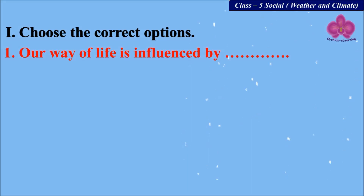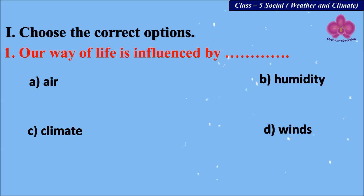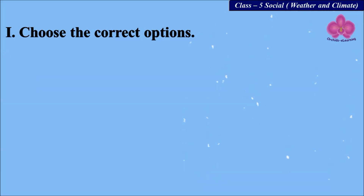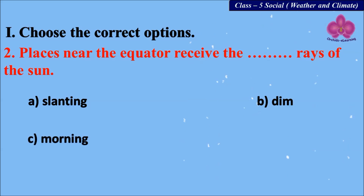Number one: our way of life is influenced by dash. The options are: A) air, B) humidity, C) climate, and D) winds. Our way of life is influenced by dash, and the answer is C) climate.